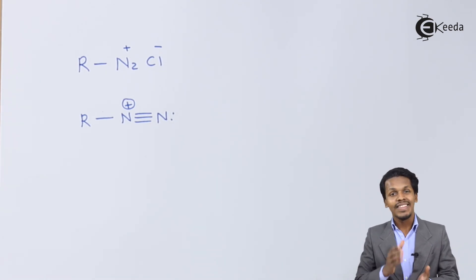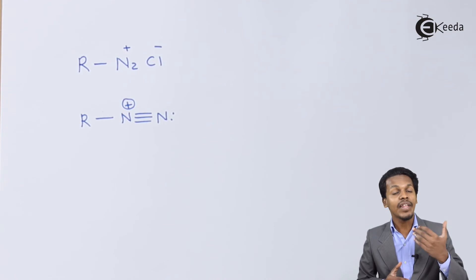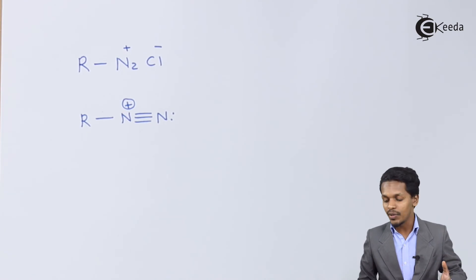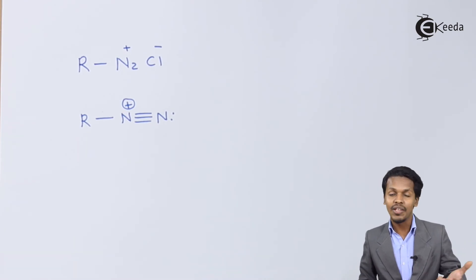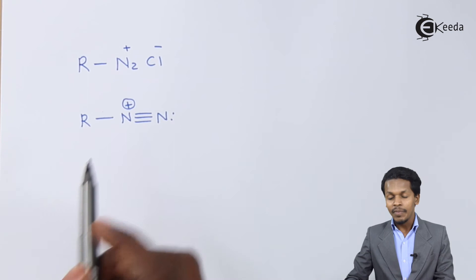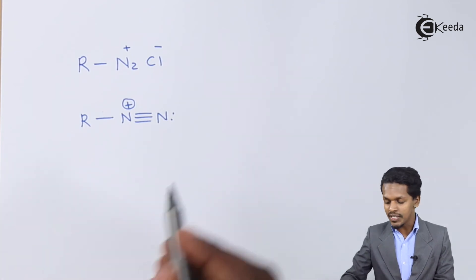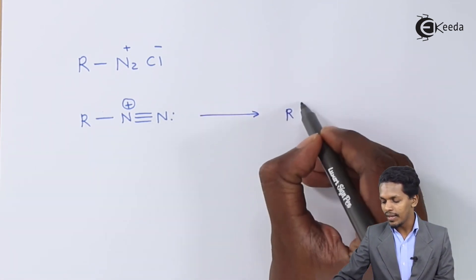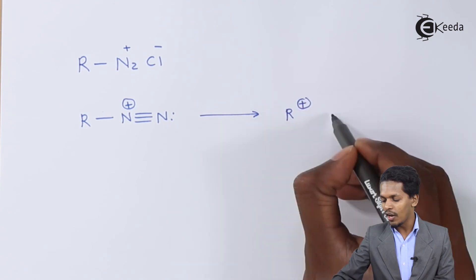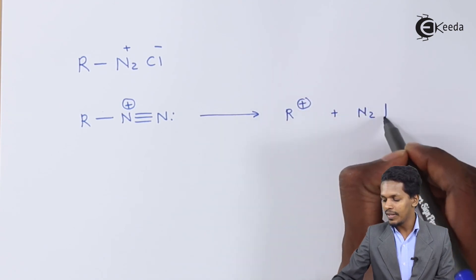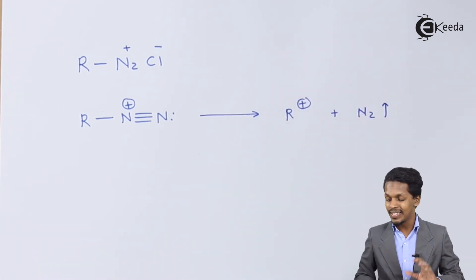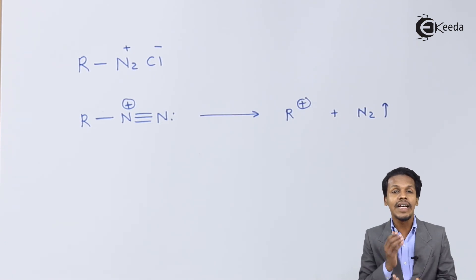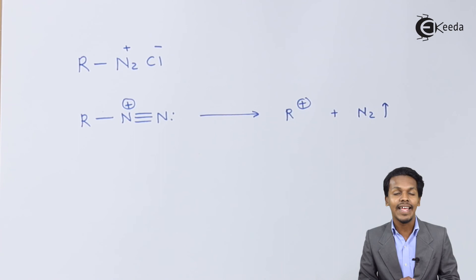And that's the reason arene diazonium salts are very much stable compared to alkyl diazonium salts. Since alkyl diazonium salts are very much unstable, there will be formation of a carbocation along with nitrogen that will be evolved in the form of gas. This is how basically the statement holds: arene diazonium salts are very much more stable than alkyl diazonium salts.